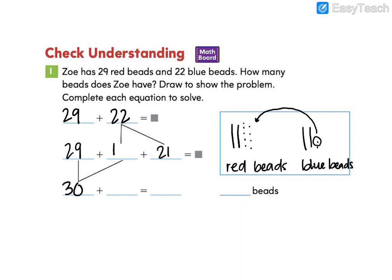So when I have 29 plus 1 more, my next tens is 30. Then I'll add my remaining 21. 2 tens greater than 30 is 50. Plus 1 more is 51. So I know that there are 51 beads.